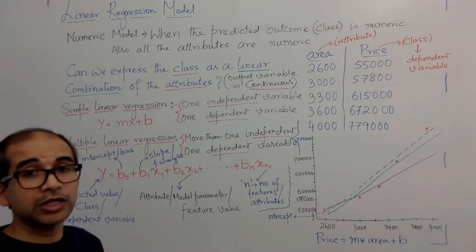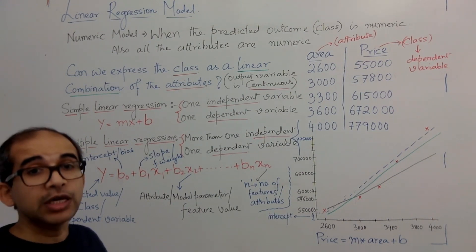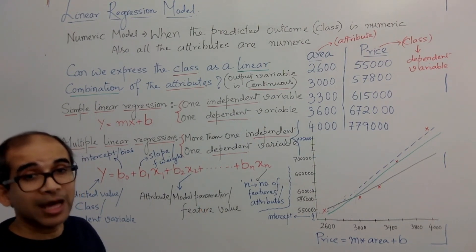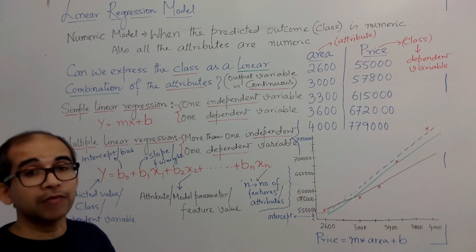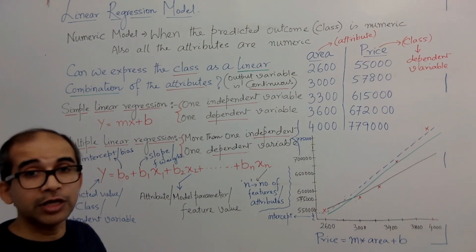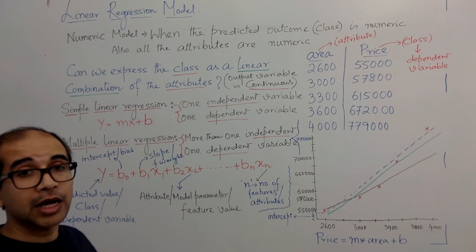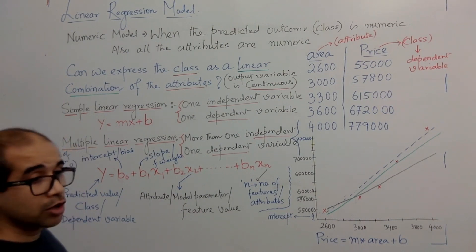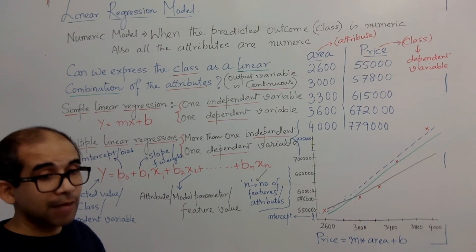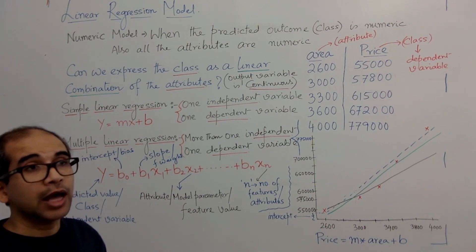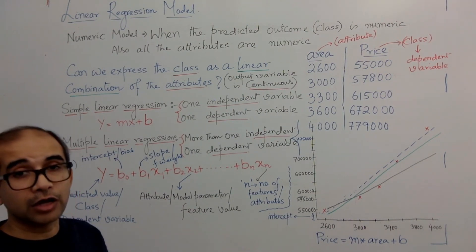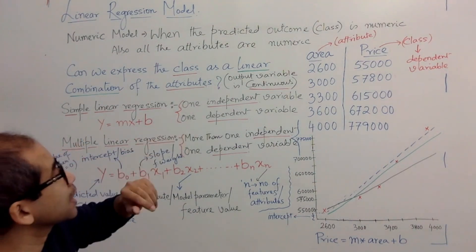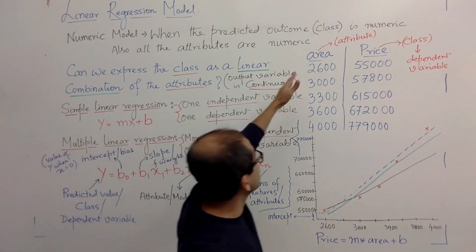The outcome is a continuous numeric variable. Can we express the class — that means the outcome of the predicted variable — as a linear combination of the attributes? We have already used this term 'linear combination' earlier. So now we are trying to find out: can you create a linear combination of some independent variables and then predict the value of a continuous dependent variable?